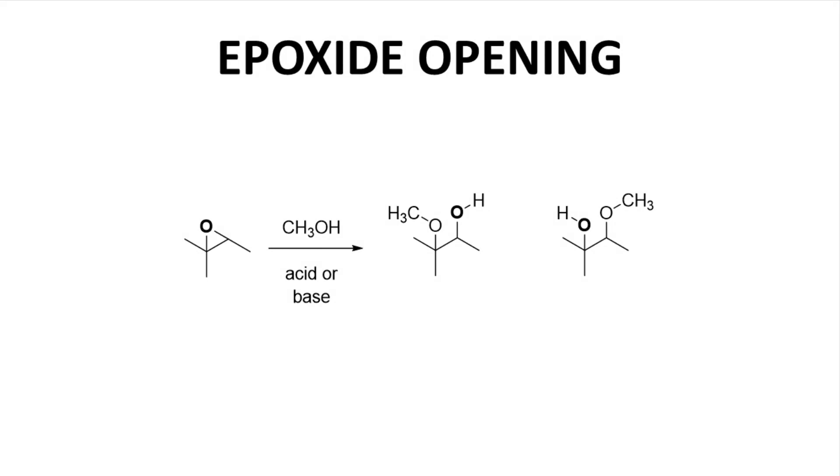Another reaction with regiochemical implications is an epoxide opening. Epoxides are typically opened with either weak nucleophiles, often with acid, or strong nucleophiles, generally basic conditions. In either case, two regioisomeric products are possible. Note that the left regioisomer has the epoxide oxygen on the less substituted side, and the new methoxy group has added to the more substituted carbon. In the right regioisomer, the epoxide oxygen is on the more substituted side of the epoxide, and the methoxy group is on the less substituted side.